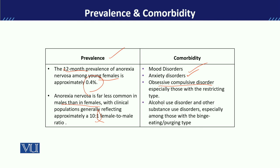Alcohol use disorder and different substances are mostly seen in binge eaters or the purging type. So OCD is more commonly found in the restrictive type, whereas alcohol use or substance use disorder is more commonly found in the purging type.